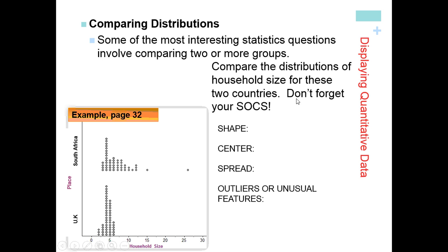Often we want to compare two sets of data like this, and when we do, we really need to make sure we're using words of comparison — not just listing what the centers and shapes are, but actually comparing the two. So here we're going to use our SOCS: shapes, outliers, center, spread.